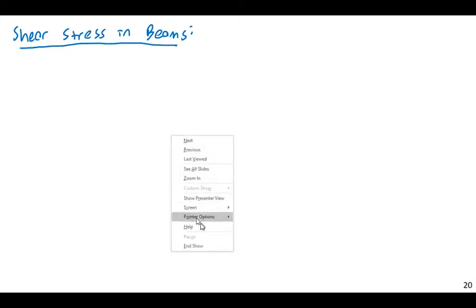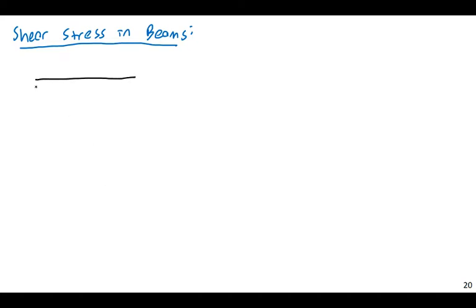Shear stress in beams. If you consider something with a point load in the middle, just a simply supported beam with a point load, for example. If you have a load P here and reactions P over 2, we know we would end up with a shear diagram that is something like this, with V equal to P over 2 and P over 2.